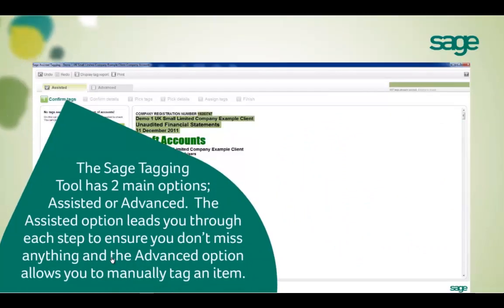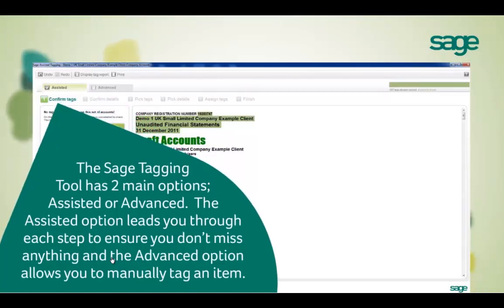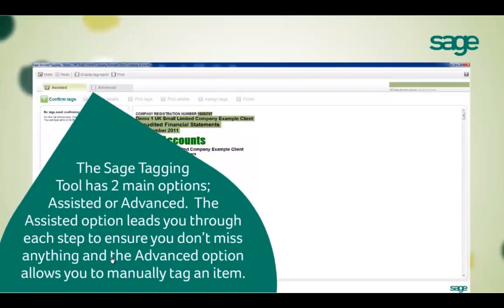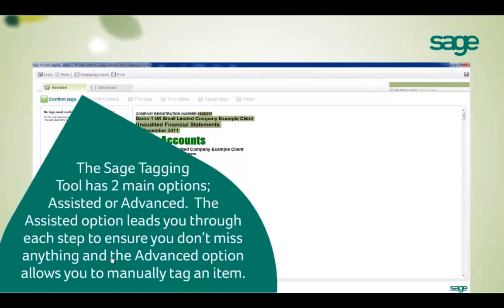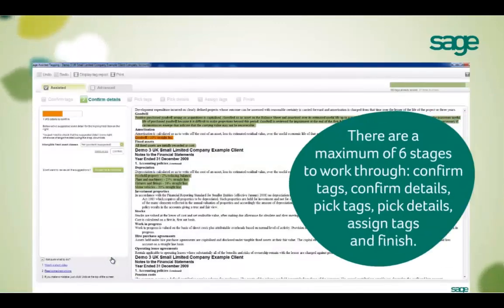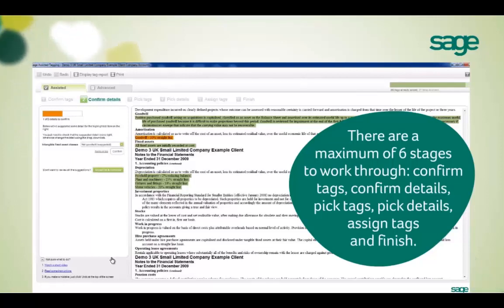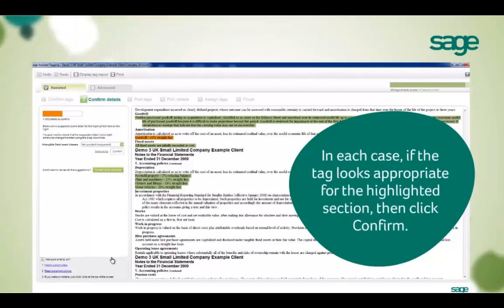We give you two main tagging options: assisted or advanced. The assisted option does as much work for you as possible and the advanced option allows you to tag everything manually. There are only six stages in our assisted tagging tool, which you can see along the top: one, confirm tags; two, confirm details; three, pick tags; four, pick details; five, assign tags; and six, finish.